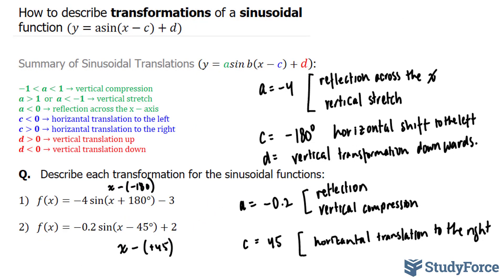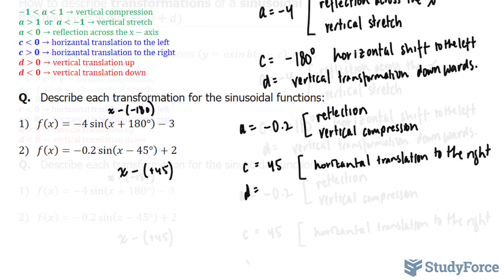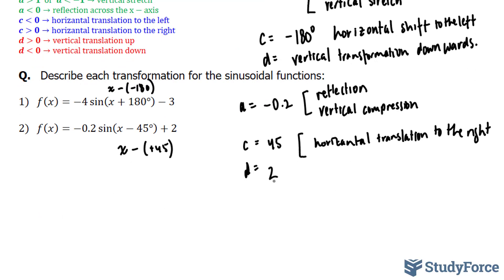Lastly, our d value is plus 2. This tells us that we will end up with a vertical translation — this time upwards — by 2 units. So all the y-coordinates will be pushed up 2 units, giving us a vertical translation upwards.